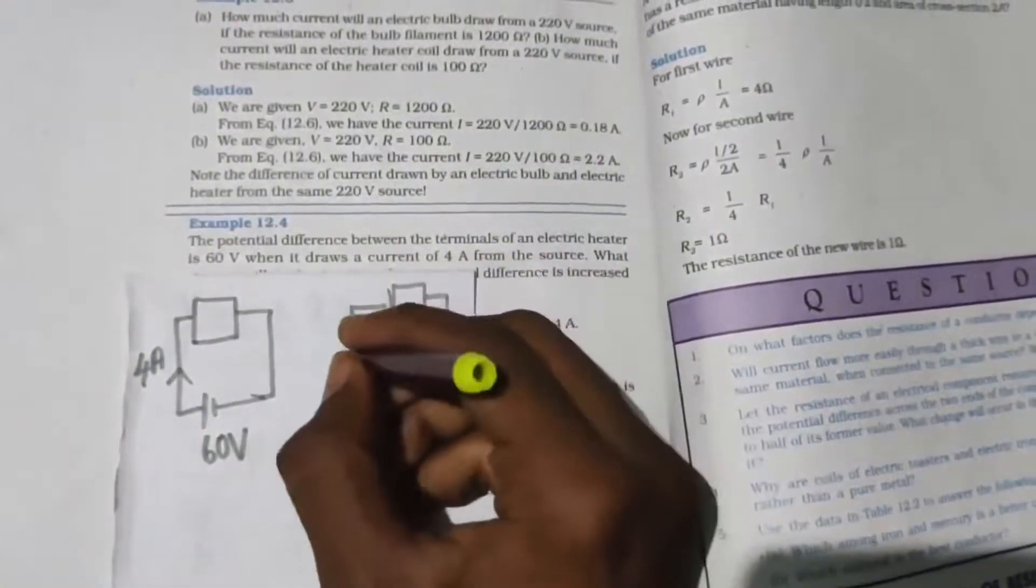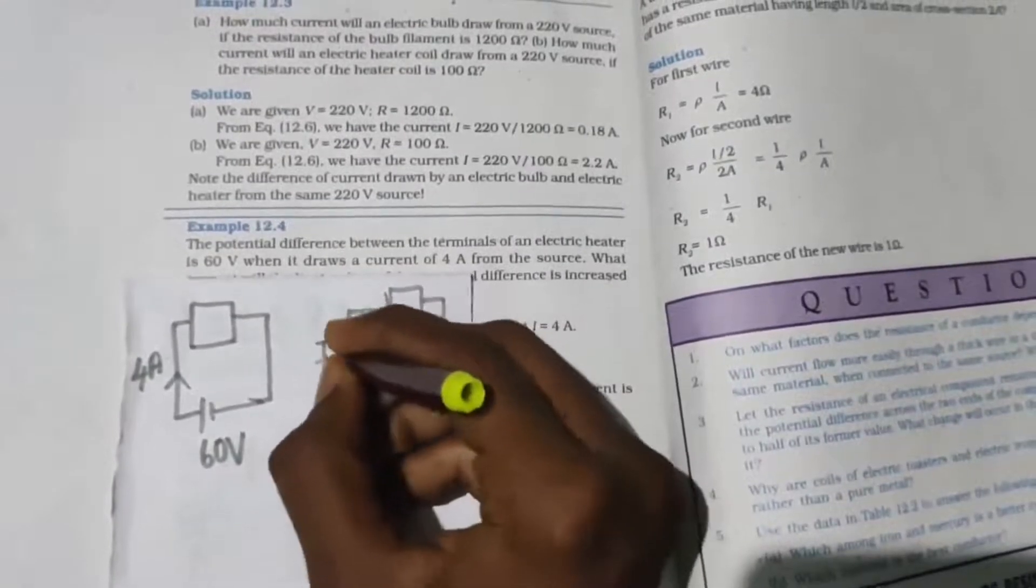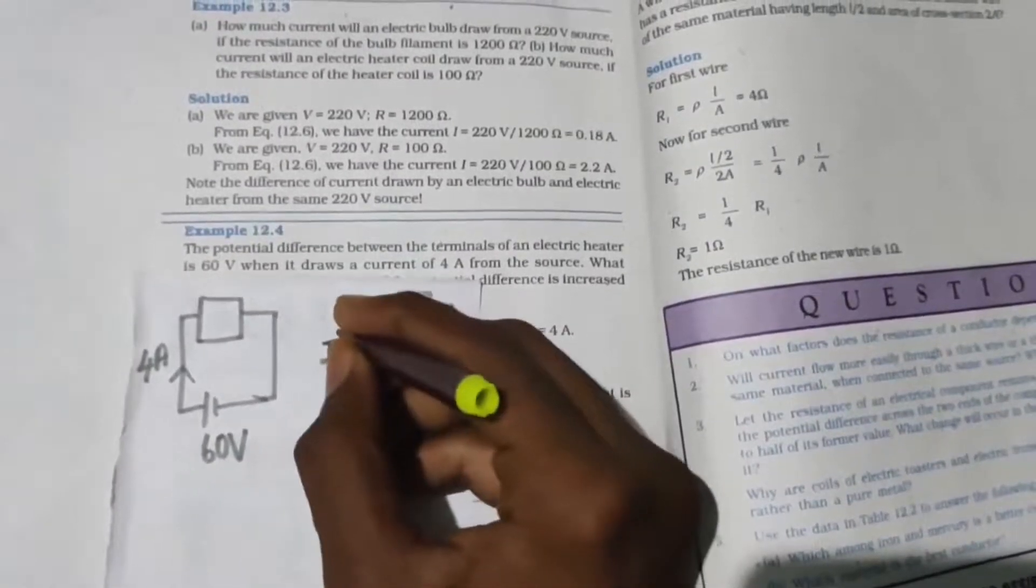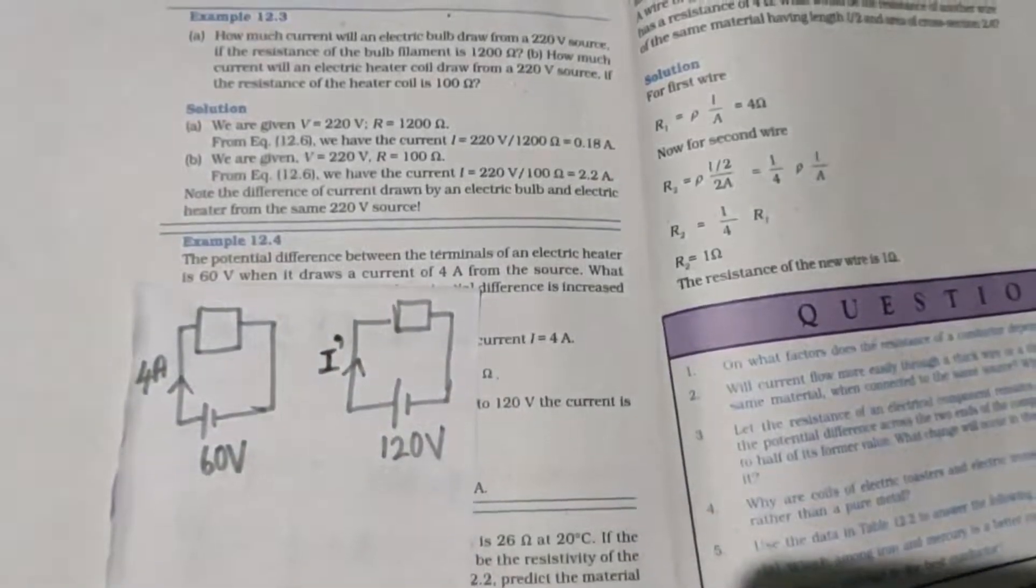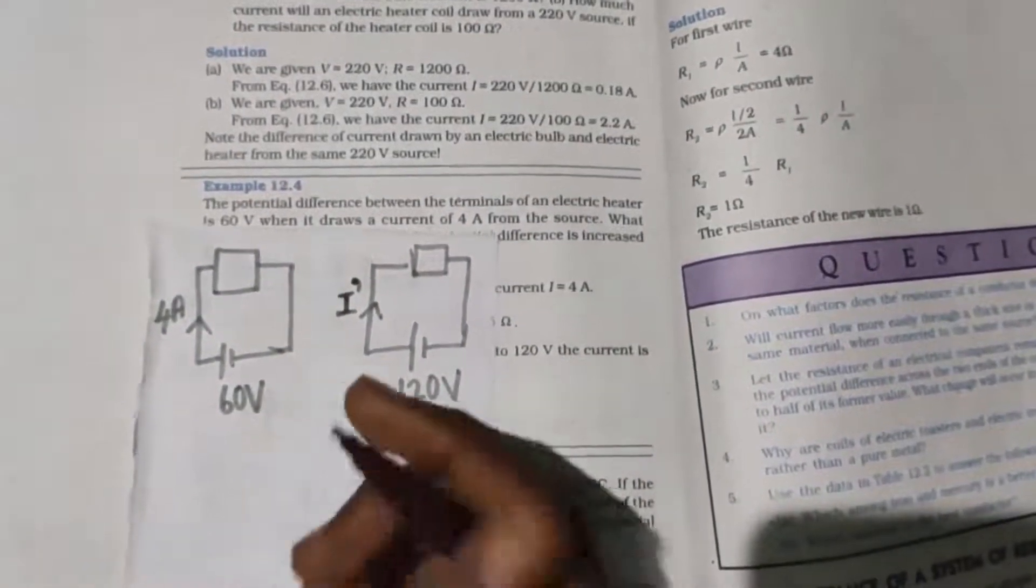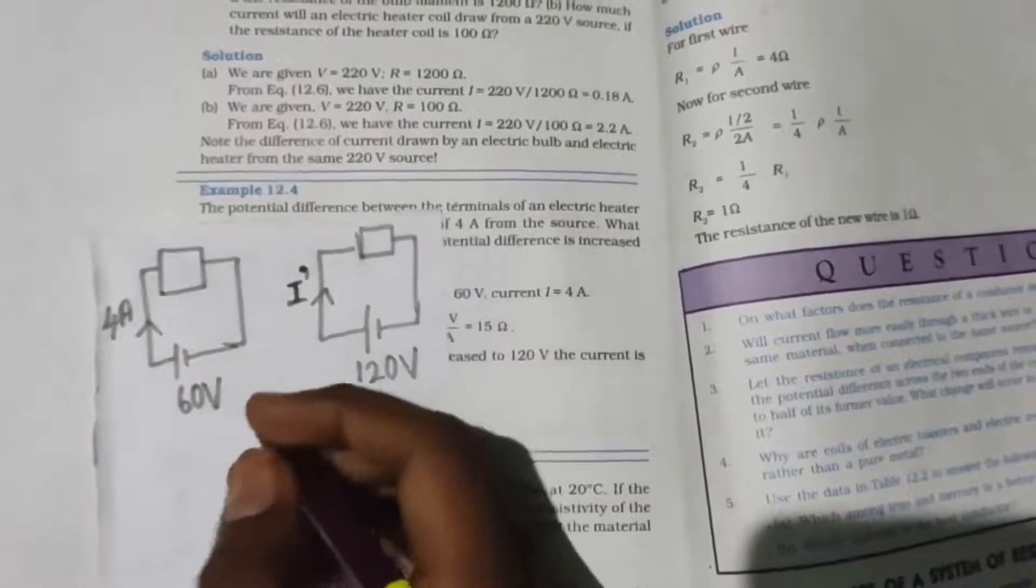They are asking you to find the current. Let us keep this one as I dash, the new current. You can very easily find this. If you want to find it, first you need to know what is important - you can find the resistance.